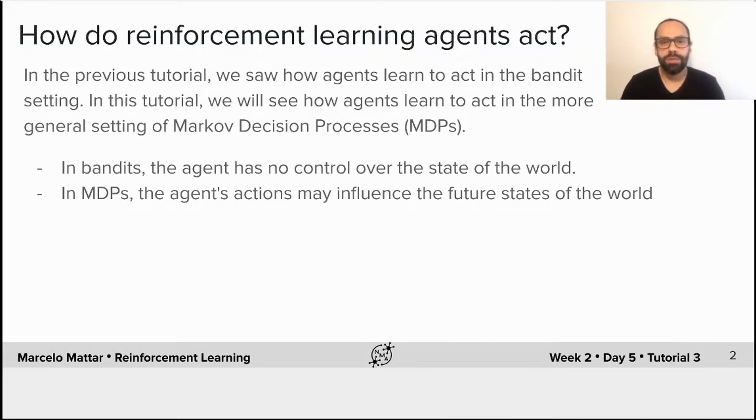This tutorial will continue addressing that very important question: how do reinforcement learning agents learn to act? While in the previous tutorial we saw how agents learn to act in the bandit setting, in this tutorial we're going to see how agents learn to act in the more general setting of Markov decision processes.